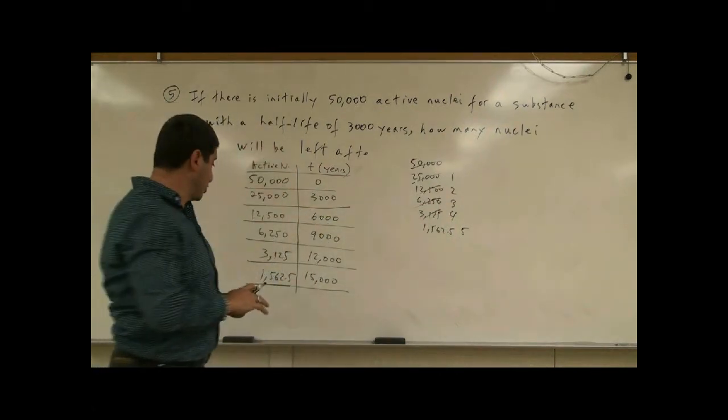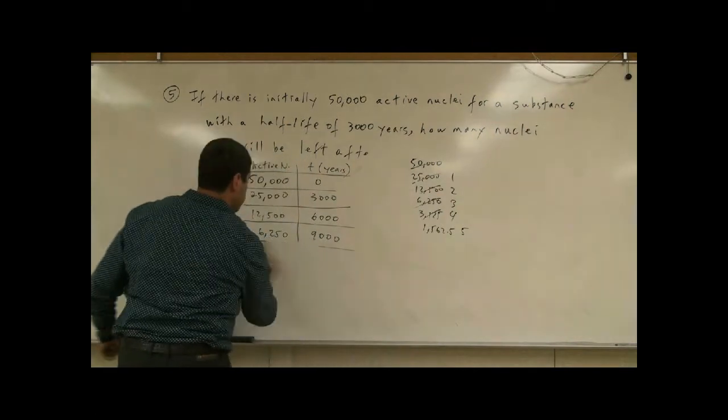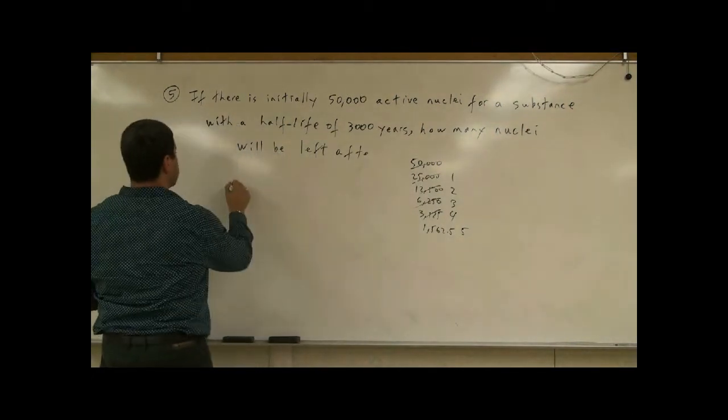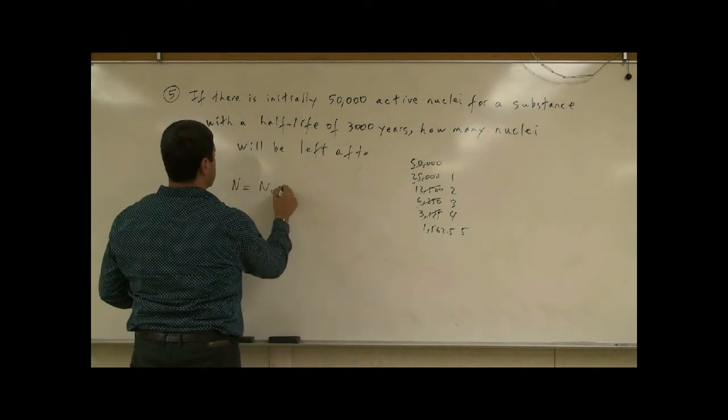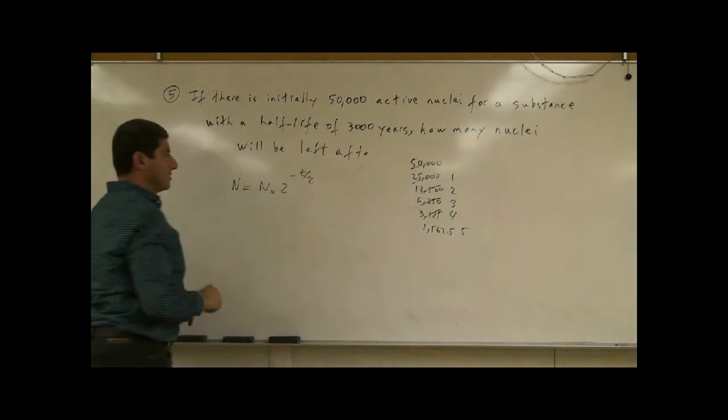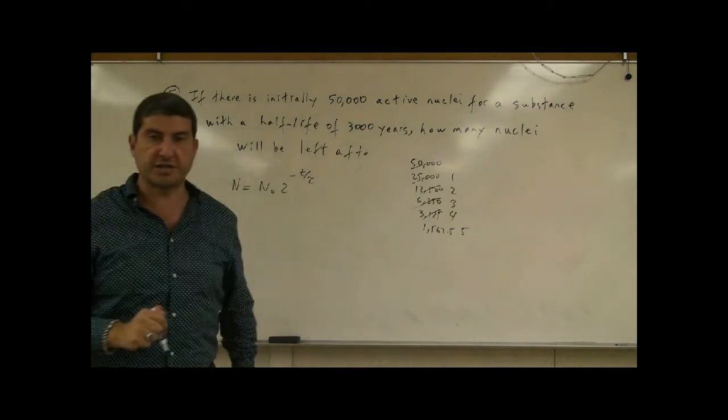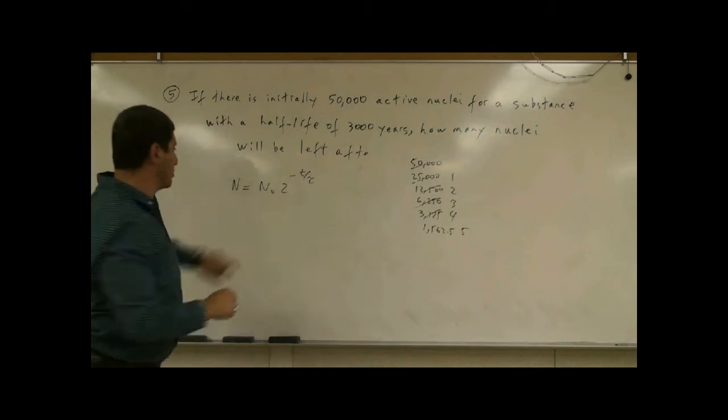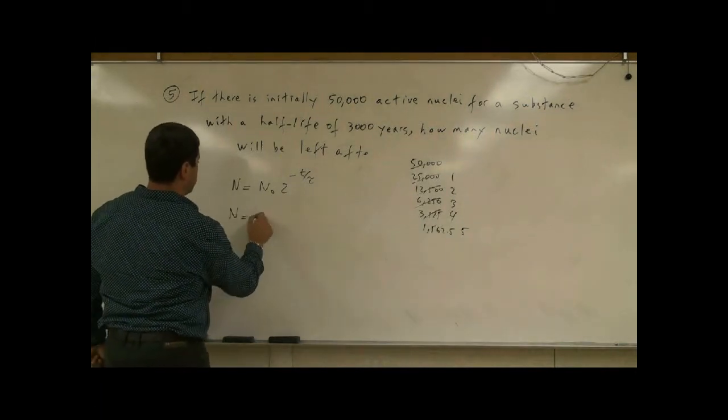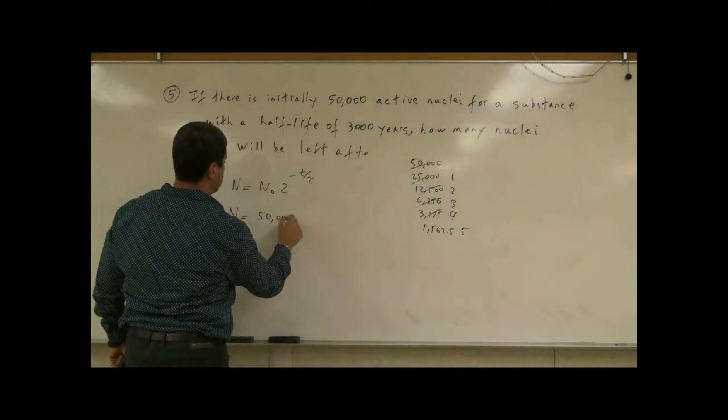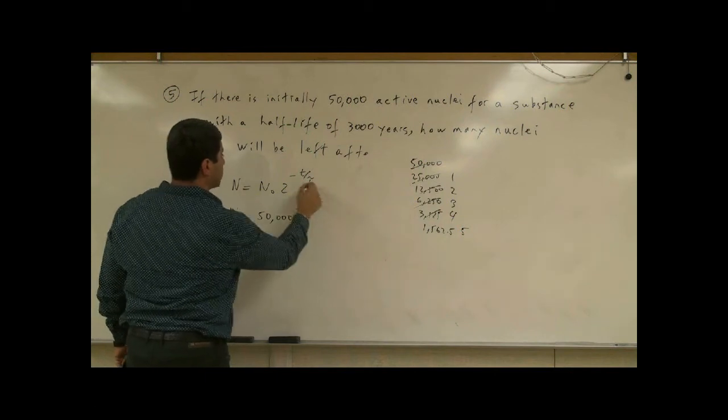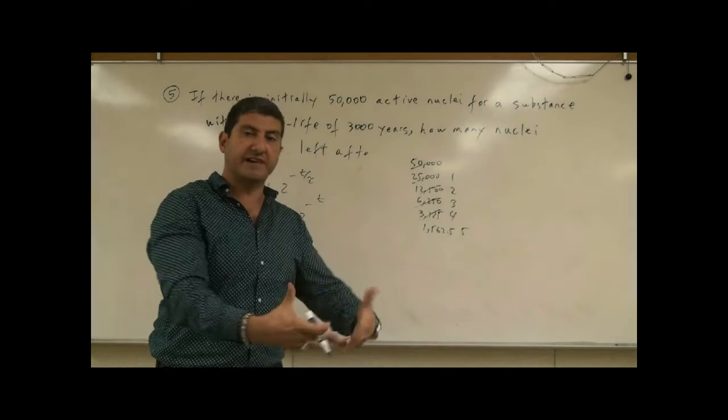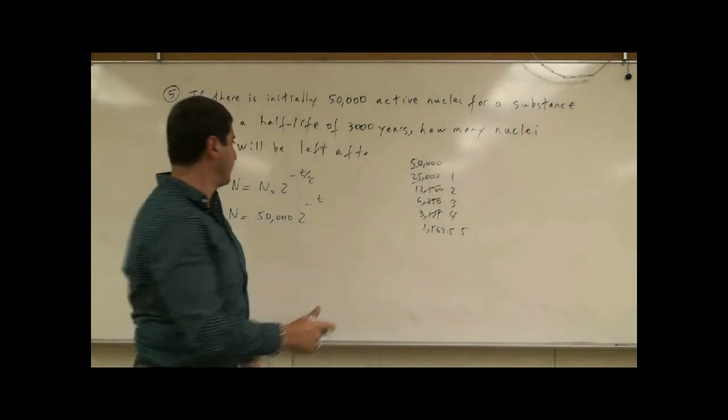The official equation for expressing this would be N equals N0 times 2 to the minus T over tau. This is the math way of expressing this. N0 is the original number of active nuclei, so that would be 50,000. What's tau? Tau is the Greek letter to signify half-life, so the half-life is 3,000 years.